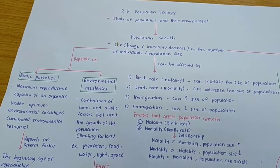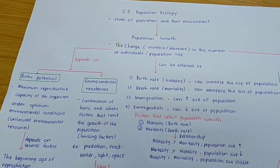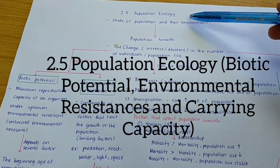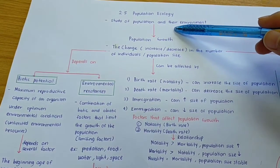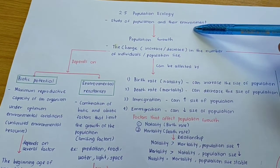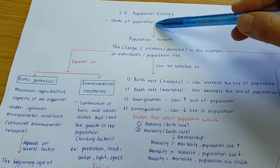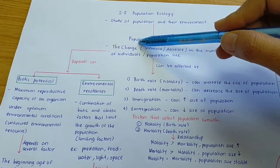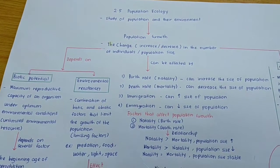Now we look at the last subtopic in chapter 2, which is subtopic 2.5, Population Ecology. So first of all, what is Population Ecology? It is the study of population and their environment. This population ecology will be related with population growth. So what is population growth?